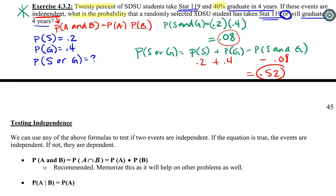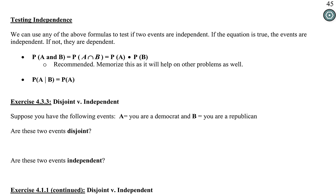How else is this used on tests? I'll make you identify if events are independent or disjoint based on common sense, and also have you test using probabilities. To test using probabilities: either use the AND formula — if P(A and B) = P(A)×P(B) is true, they're independent; if not, they're dependent — or use the conditional probability, and if P(A|B) equals the marginal P(A), then they're independent. The next two questions use common sense to identify whether events are independent or disjoint.